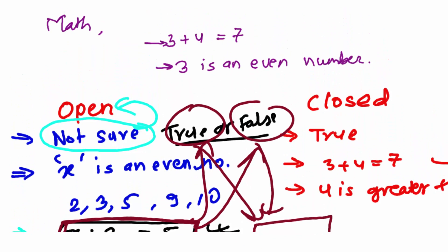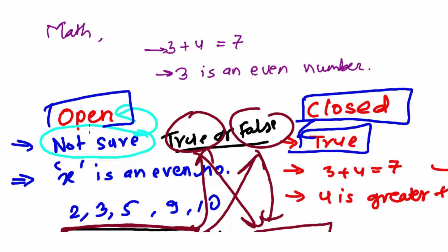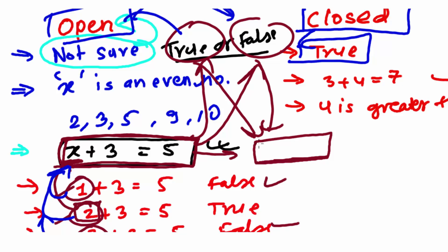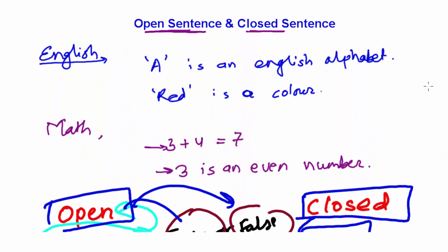I hope you understand this basic concept. Remember: closed sentences are always true. Open sentences can be true or false — you don't know, you're not sure. It's like a blank nameplate where you can write 'true' or 'false.' Such mathematical sentences are called open sentences.